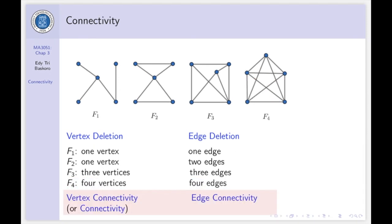So these are examples of connectivity. When we talk about connectivities, we can have two kinds: vertex connectivity and edge connectivity.